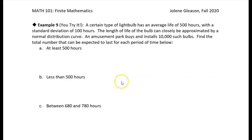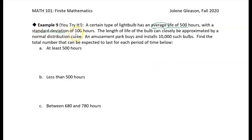In this problem, we have a certain type of light bulb that has an average — average is the same as mean — life of 500 hours, with a standard deviation of 100 hours. The length of life of the bulb can closely be approximated by a normal distribution curve. An amusement park buys and installs 10,000 such bulbs. Find the total number that can be expected to last for each time period below.